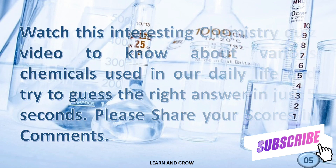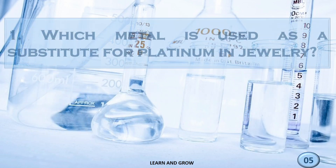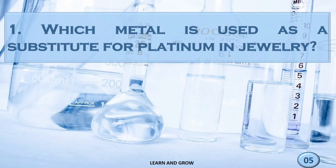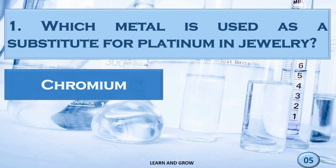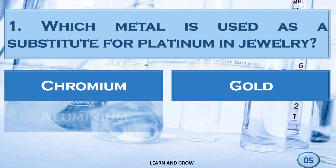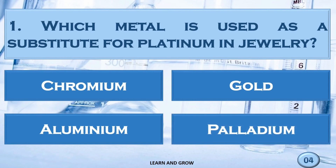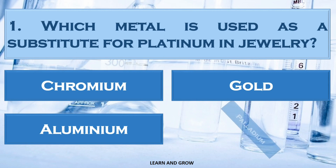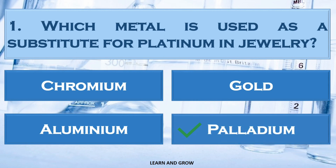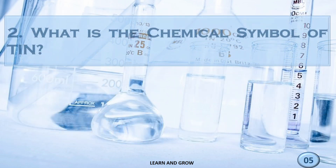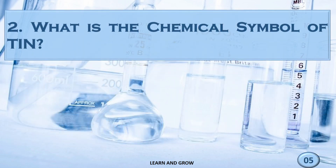Which metal is used as a substitute for platinum in jewelry? The correct answer is palladium. What is the chemical symbol of tin?